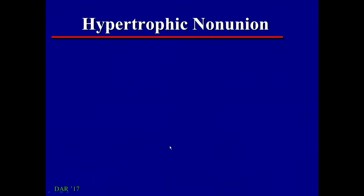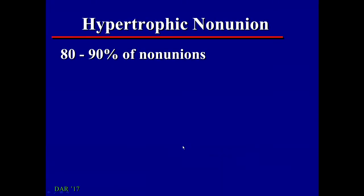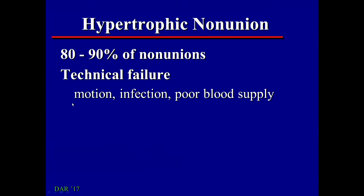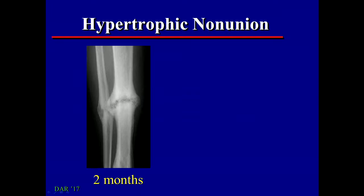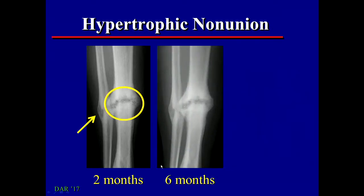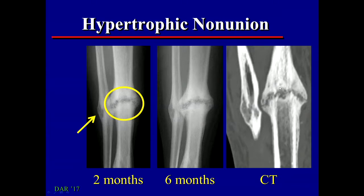There are two types of non-union. The most common is hypertrophic non-union, which is basically a technical failure — typically too much motion at the fracture site, failure of fixation, infection, or poor blood supply. Callus formation does occur but never bridges the fracture fragments. Here in the tibia at two months, we see a lot of callus and bridging of the fibula, but no bridging across the tibia with a persistent fracture gap. At six months there is no progression at all, confirmed on CT showing absolutely no bone grown from one fragment to the other — this is a hypertrophic non-union.